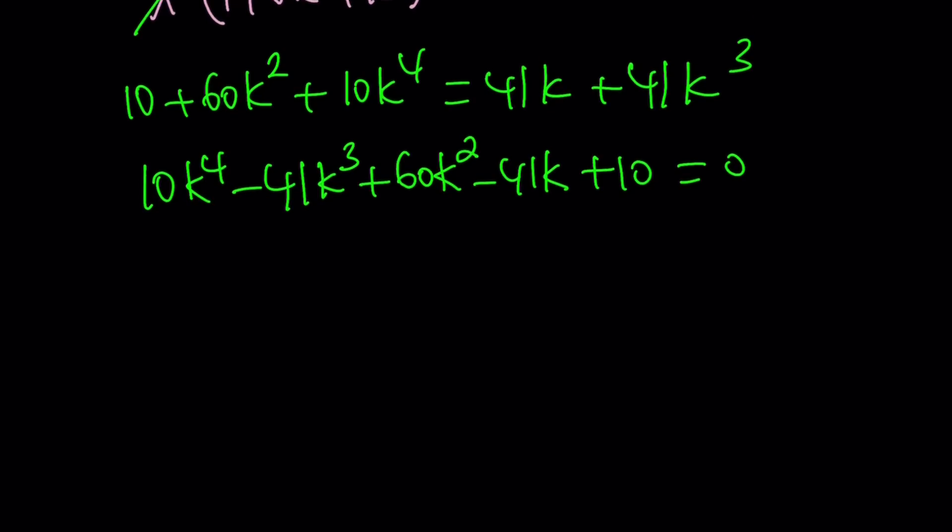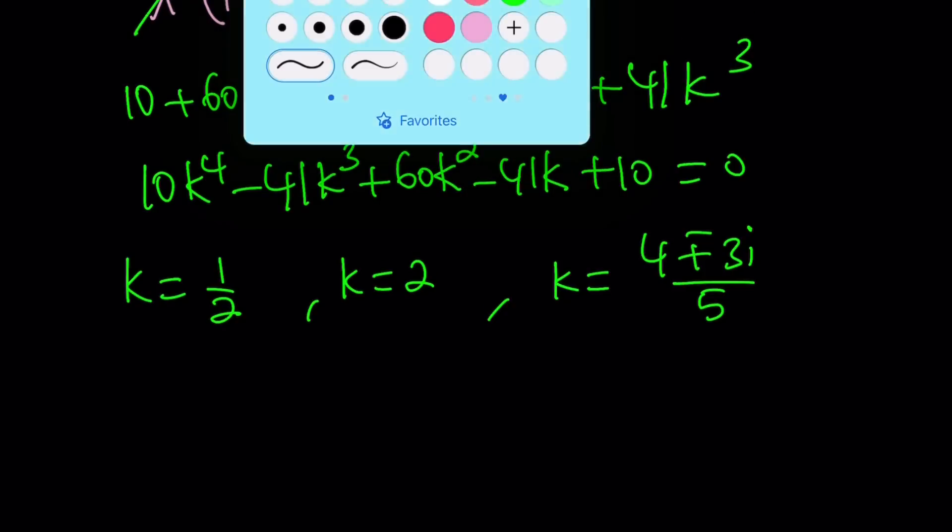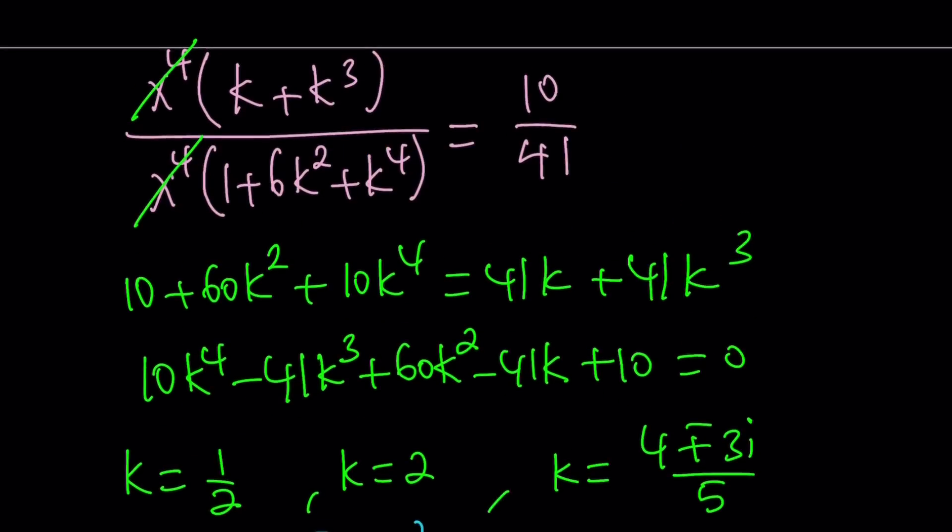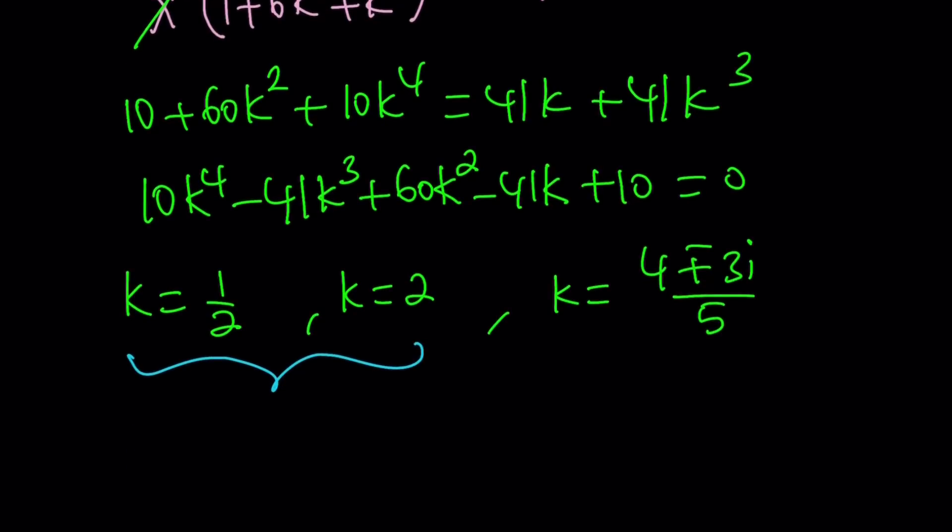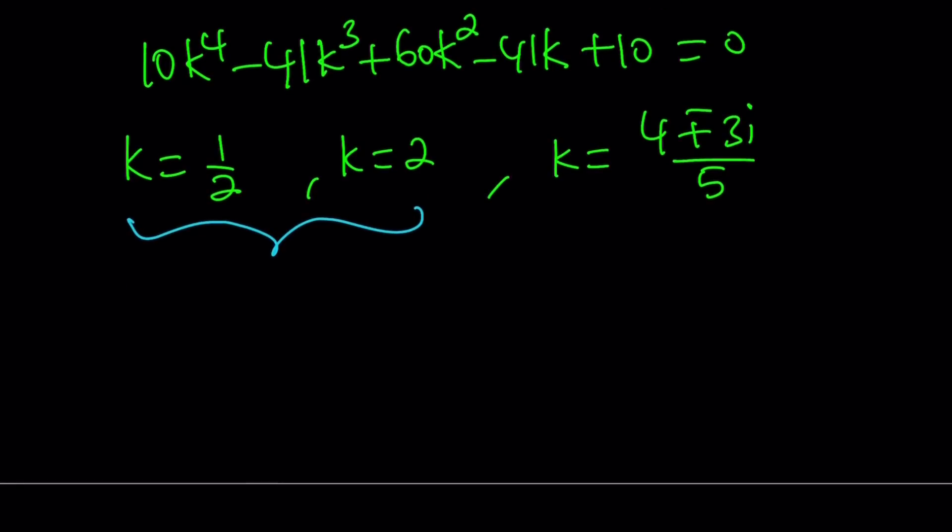Awesome. This is a quartic equation and solutions are not very easy to find, but there's a way to do it. You can use a calculator. You can just use a rational root theorem because there are some rational roots. But let me go ahead and give you the solutions for free. k equals 1 half, k equals 2. And there are two complex solutions which are given by 4 plus minus 3i over 5. Now, we see 1 half and 2, and this is normal because we have symmetry. x and y can be switched around, so if you get y equals 2x, it also means x equals 2y. That's why we have this situation here. It doesn't matter which one you use.